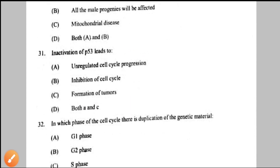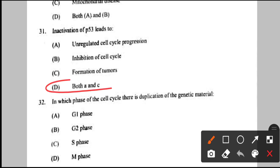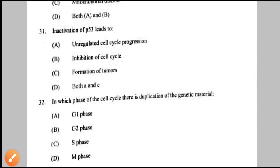Question number 31: inactivation of P53 leads to — P53 is a tumor suppressor gene. If it is inactivated, tumor formation will occur due to unregulated cell cycle progression. Both A and C are correct — option D is the answer.